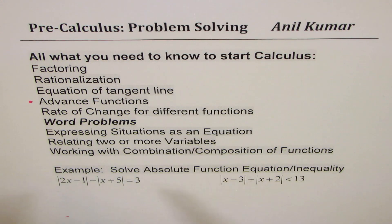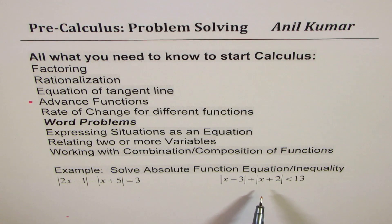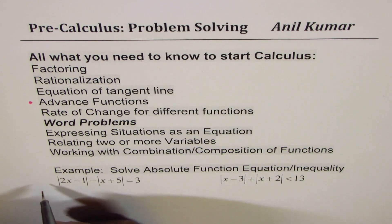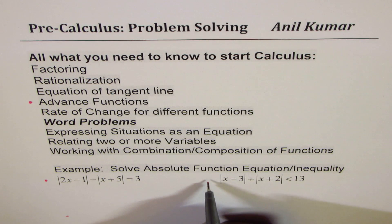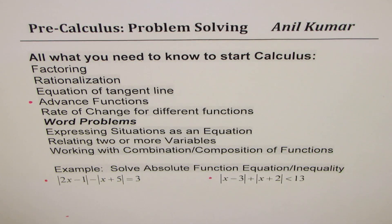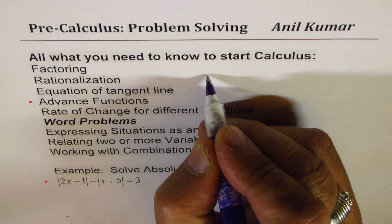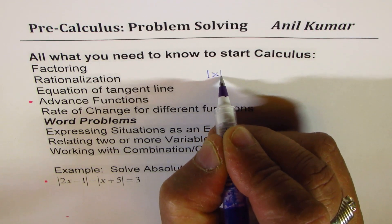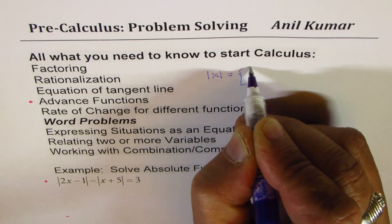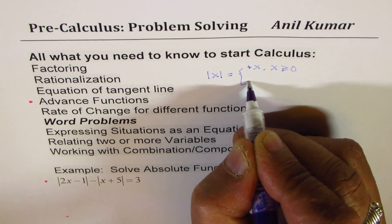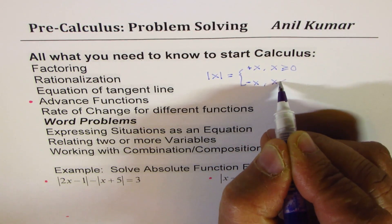From advanced functions I've picked up absolute functions, which I find some students having difficulty with. The question here is to solve an absolute function equation and inequality — we have two examples, the first one is an equation and the other one is an inequality. Now before getting into solving these, let me tell you what the absolute function is. Absolute |x| is defined as positive x if x is greater than or equal to 0, and negative x if x is less than 0.